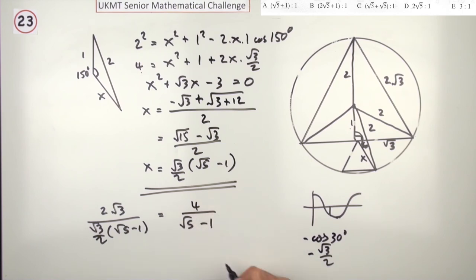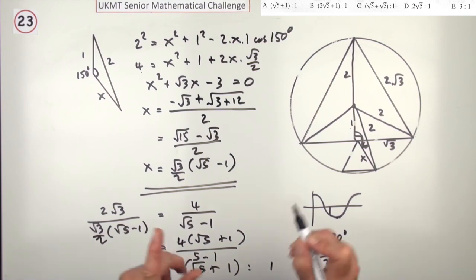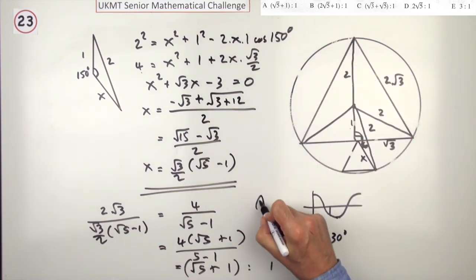The root 3's cancelled, the 2 pops on top, so that's the same as 4. So I've got 4 over root 5 minus 1. You've just got to rationalize that denominator. You multiply the top and the bottom by the conjugate that forms the difference of two squares, which is root 5 plus 1. So I'll have 4 times root 5 plus 1. In forming the difference of two squares, it'll be root 5 squared, which is 5, take away 1 squared, which is 1. That's 4, that cancels out that 4. So there's the answer, root 5 plus 1 to 1. That's answer A.